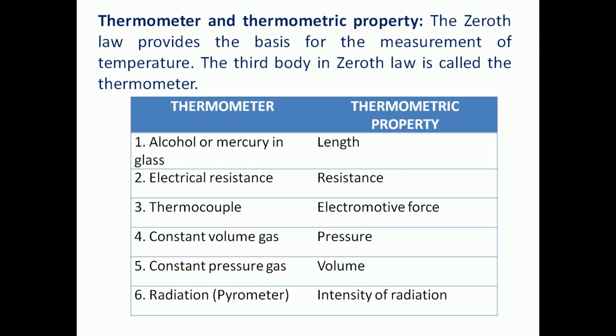The zeroth law of thermodynamics provides the base for measuring temperature. Temperature is a measure of hotness or coldness. The measurement is carried out using equipment called a thermometer, and the thermometric property is one of the thermodynamic properties. The zeroth law provides the basis for the measurement of temperature — how hot or cold something is — and that measurement is called the measurement of temperature.